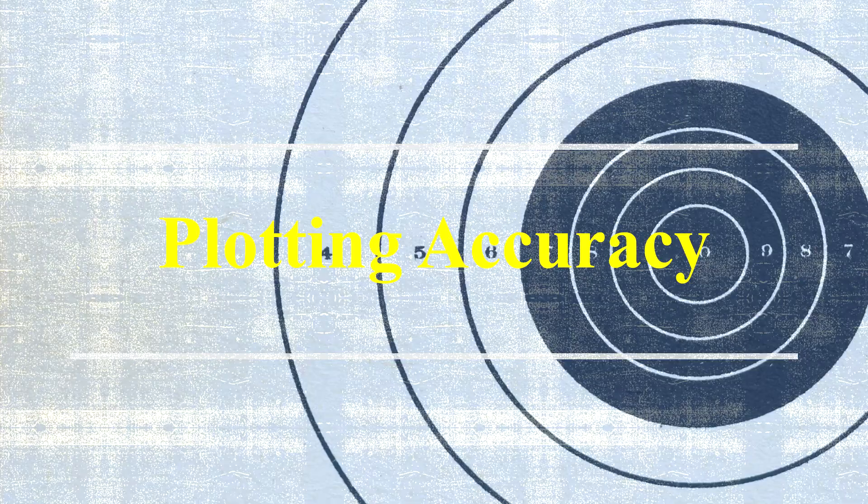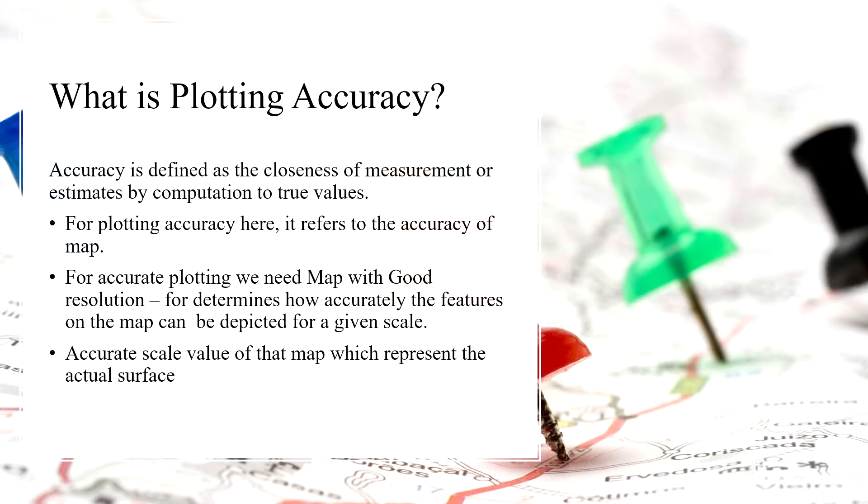First, we have to know about accuracy before knowing the plotting accuracy. Accuracy is defined as the closeness of measurement. It means the measurement value of the measure is 25 meter.